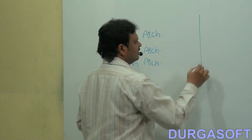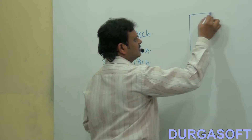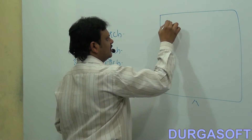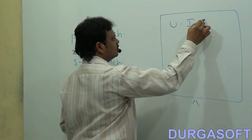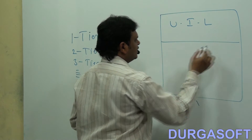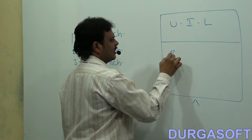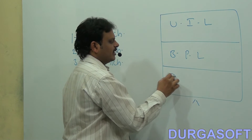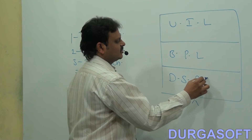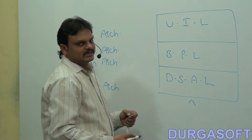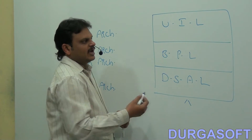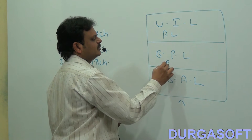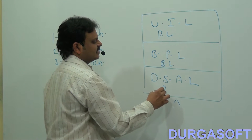For example, if this is our single PC, here itself we have to provide the user interface layer, here itself we have to provide the business processing layer, and here itself we have to provide the data storage and access layer. That means within a single machine, we have to provide presentation logic, business logic, and persistence logic.